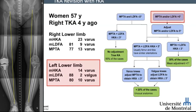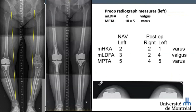For the left lower limb, the LDFA is 2 degree varus, which is within the boundaries, but the MPTA is 10 degree varus, so we need to correct that tibial alignment to a maximum of 5 degrees. The combination of 5 degree varus tibia plus 2 degree varus femur produces an HKA below 3 degrees. We then used these landmarks and anatomical orientation from the left side to guide the revision on the right side, applying the same principles to replicate the left lower limb alignment.